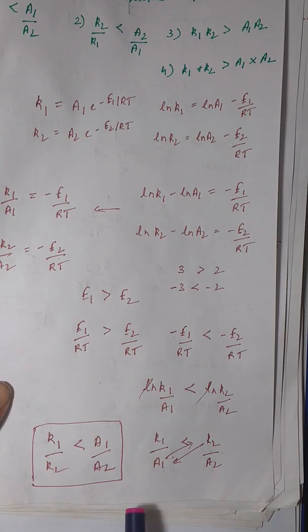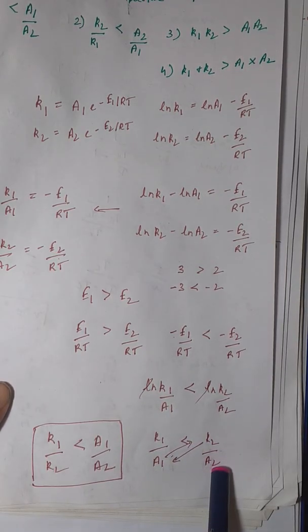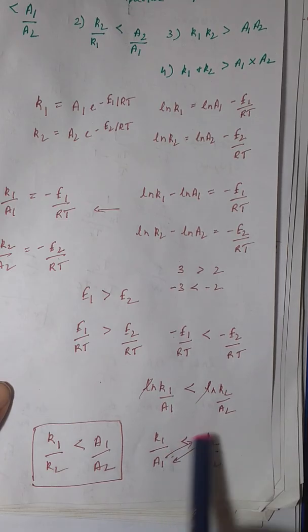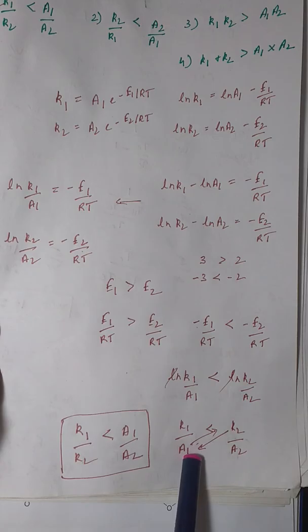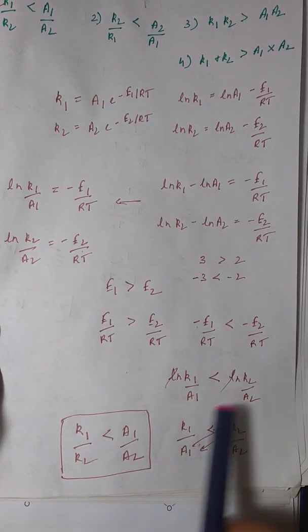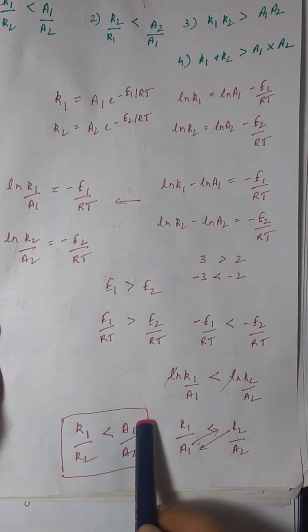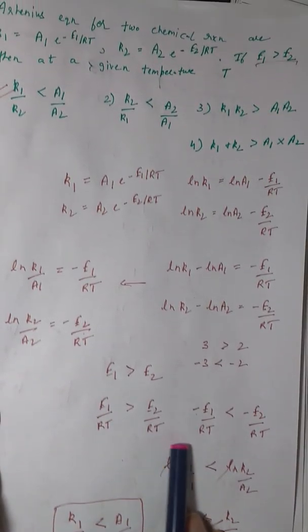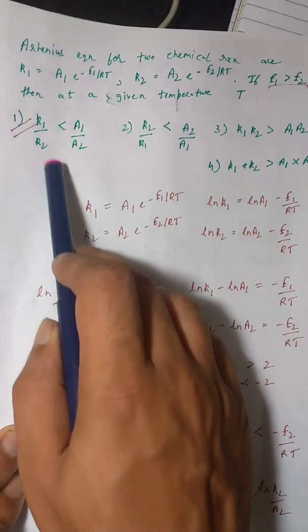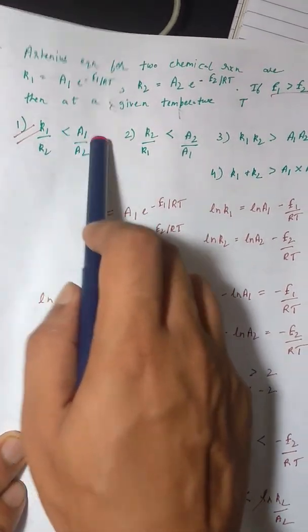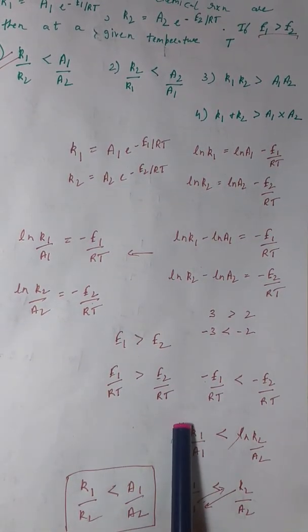Now if we look at the options, you can see that option number 1 is itself the answer. So k1/A1 is less than k2/A2, or k1/k2 is less than A1/A2. So as you saw, there has been no chemistry involved in this question.